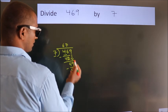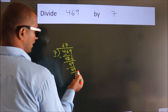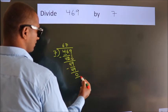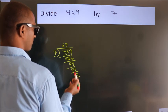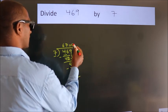After this, no more numbers to bring down. And we got remainder 0. So this is our quotient.